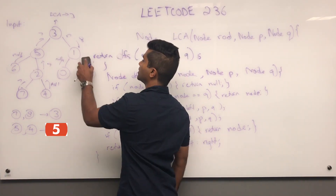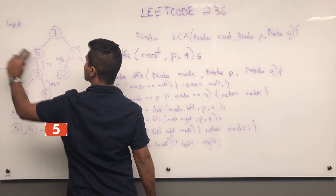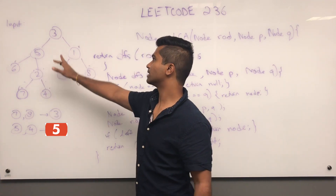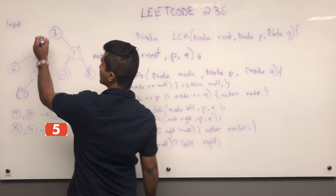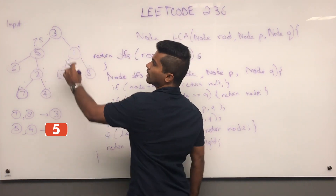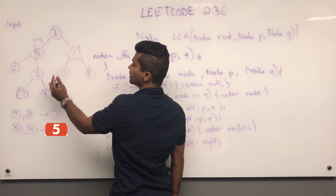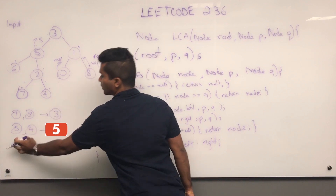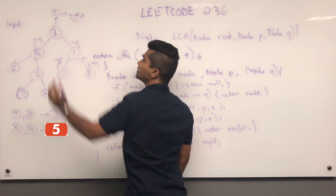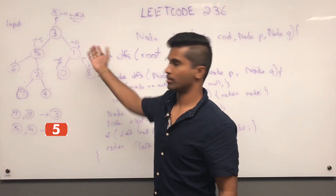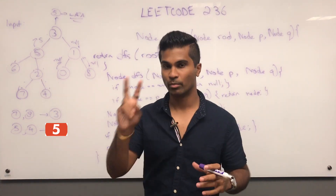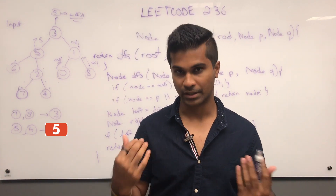For the five and four case: three asks five first. Five says it is one of the target nodes and immediately returns itself. Three is done asking its left side. Three then asks one, which is not a target node. That whole right subtree returns null. Three gets null back from the right side and five from the left, so five is the LCA. This works because when three gets null from the right side, it's guaranteed the right subtree is useless and both target nodes are in the left subtree — so whichever target node is found first is the least common ancestor.